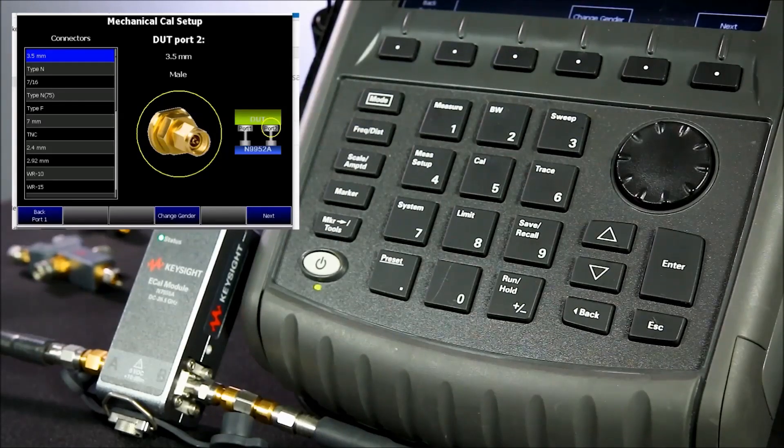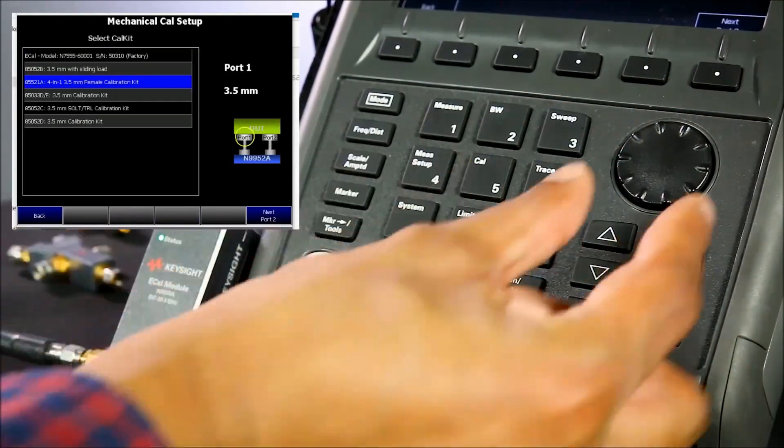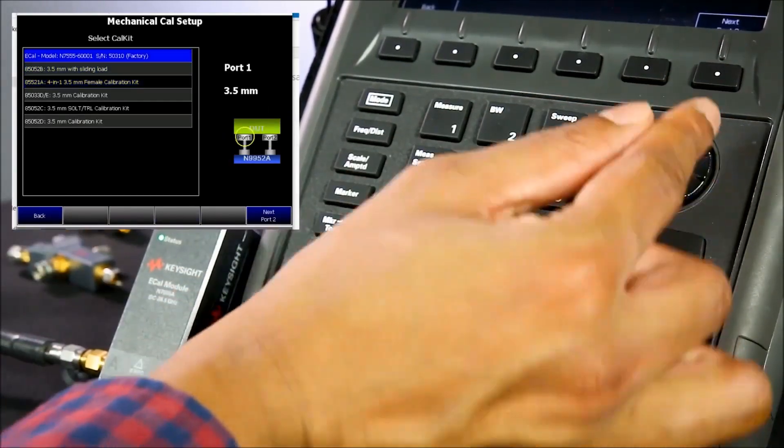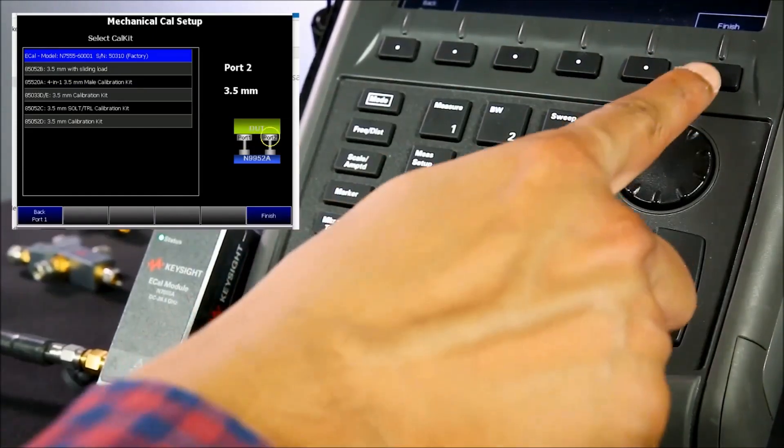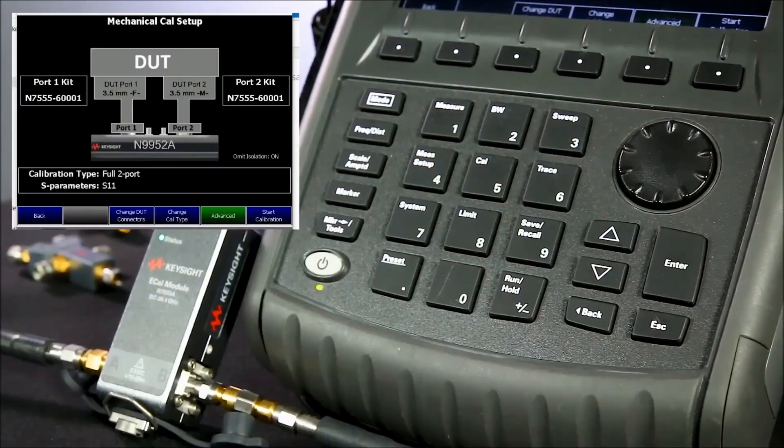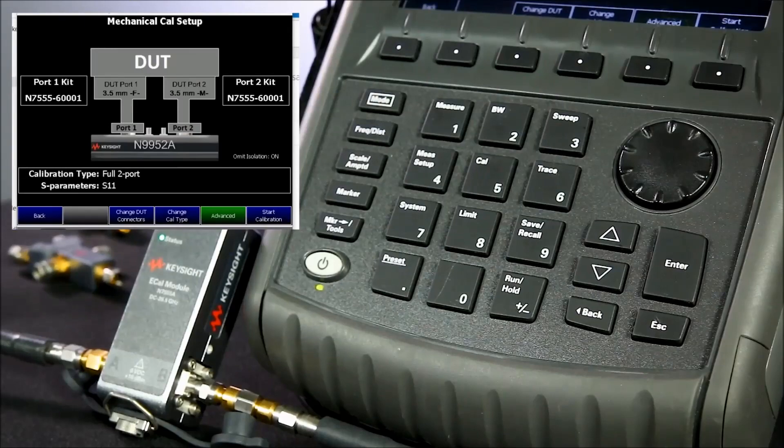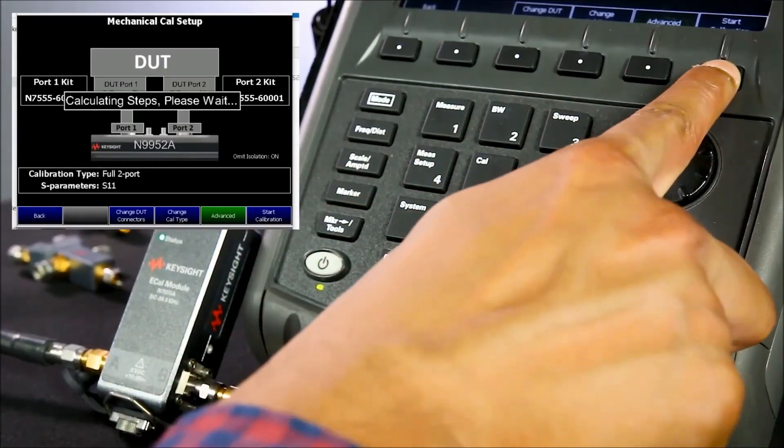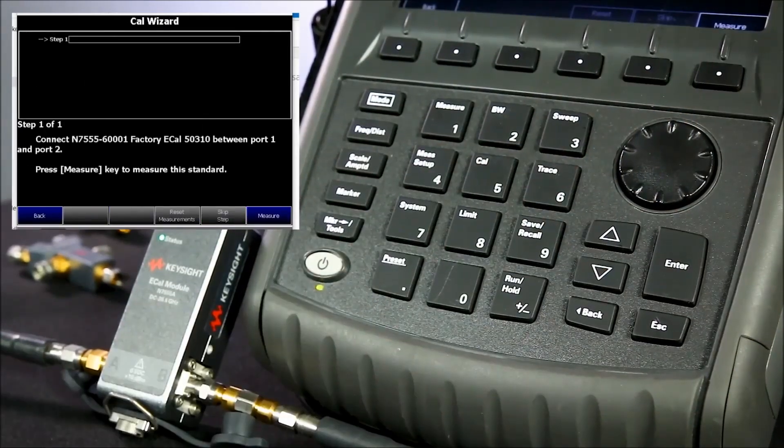FieldFox supports a variety of calibration kits. So finally, select the e-CAL module for port one and for port two. Notice the nice CAL setup display. My calibration is set up properly. Now, I simply press start calibration and press measure,